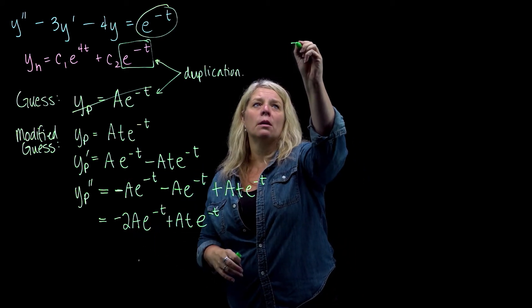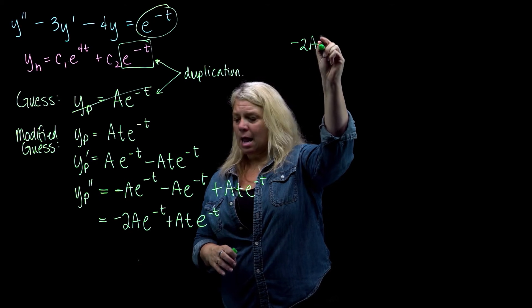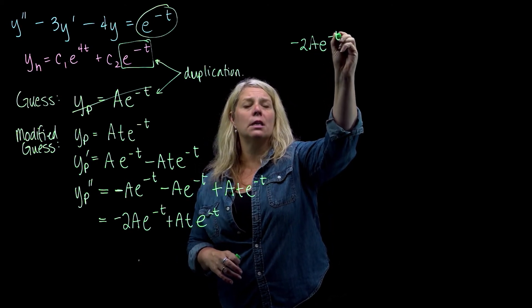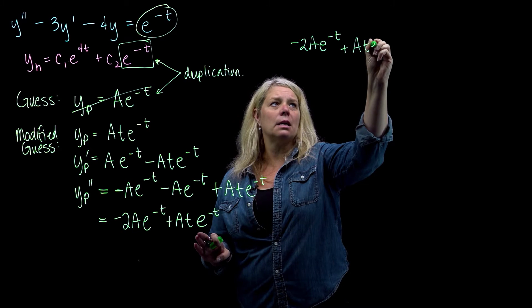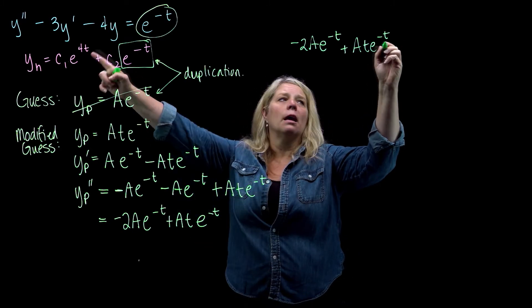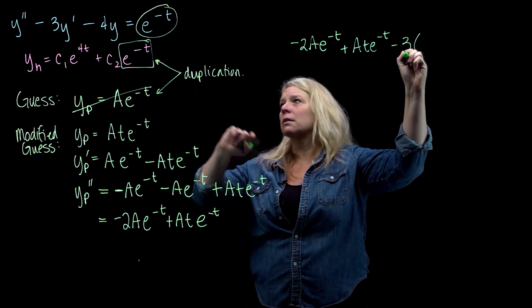Alright, so for the y double prime, we'll have minus 2A e to the negative t, plus A t e to the negative t, and then minus 3 times y prime.